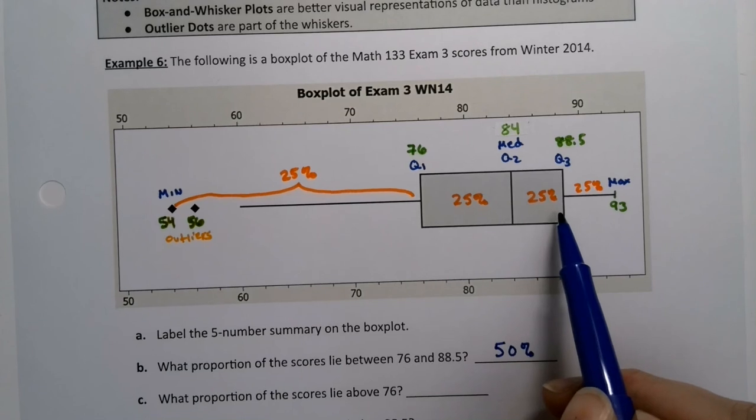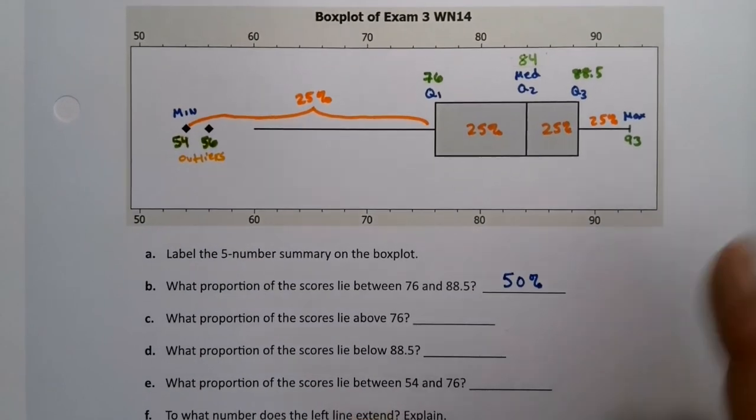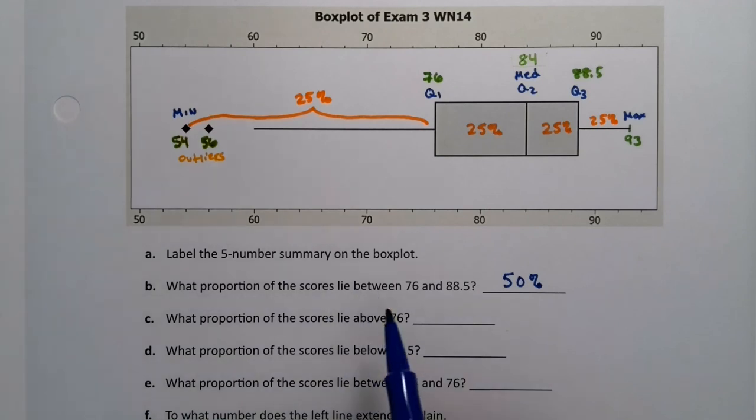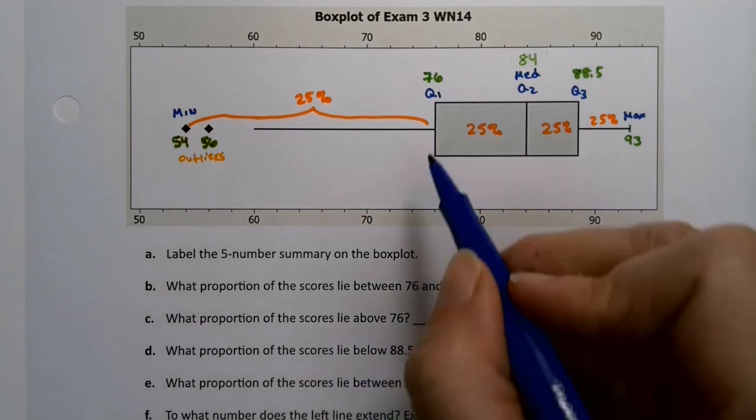That's the whole point of what a box plot is—it sections the graph up into four equal 25% sections. All right, what percentage of scores lie above 76? Okay, 76 is right here, so 75% is above it.